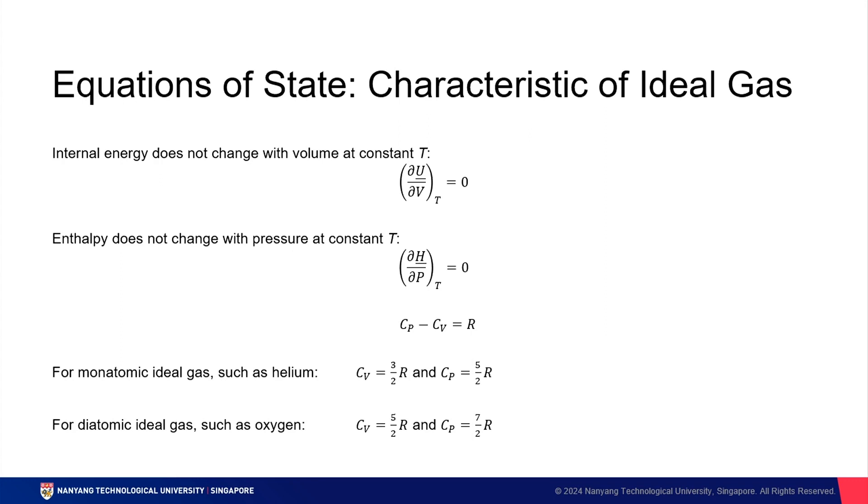So, there are a number of things that we want to try and remember about ideal gases. Firstly, at a constant temperature, internal energy does not change. Similarly, enthalpy does not change. Now, remember we talked about R a moment ago, which was the ideal gas constant. R is always going to be Cp minus Cv. Cp will always be larger than Cv. Why?